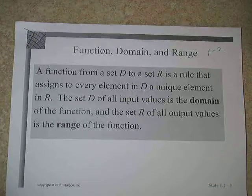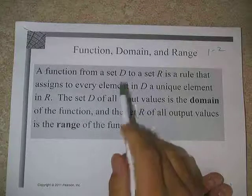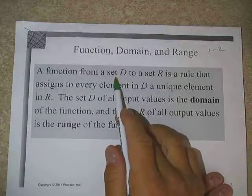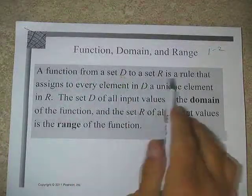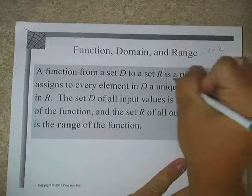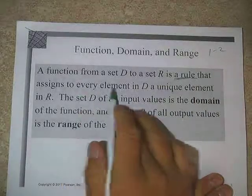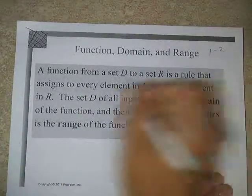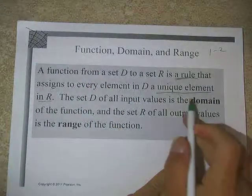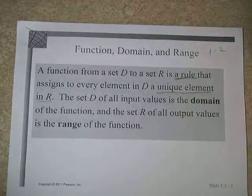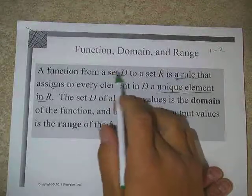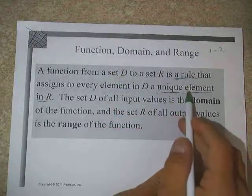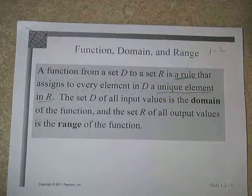I have the definition of a function, and there are a couple of key elements to look at. A function from a set D to a set R is a rule that assigns every element of D to a unique element in R. This unique element part is kind of the key to the definition — anything from the D set needs to go to just one element of the R set.